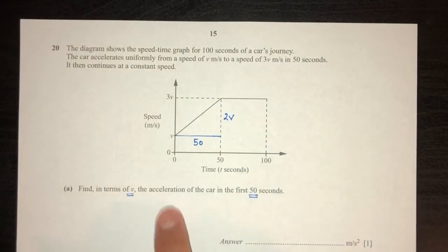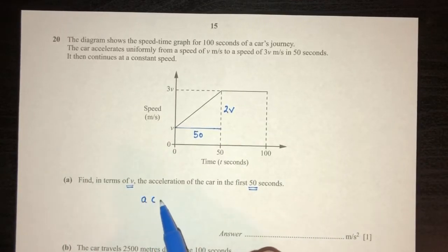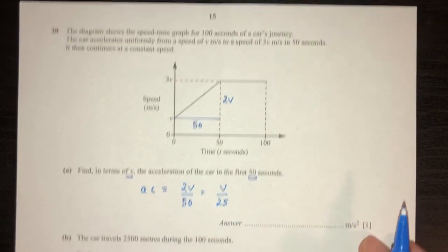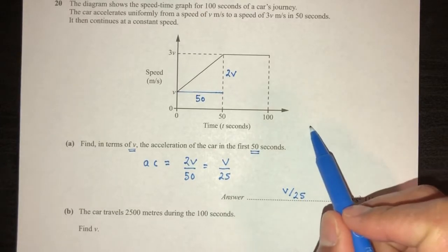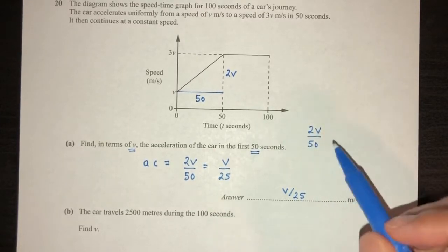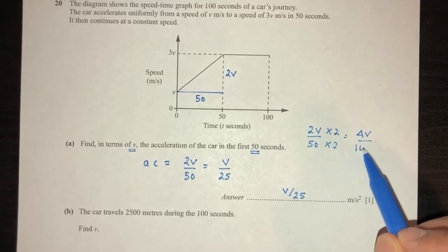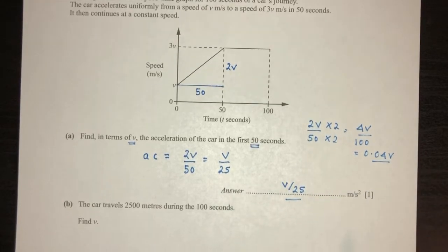So to find the acceleration, as you guys know by now, we have to look at our right angle triangle and take is equal to height divided by base. That will be V over 25. Or if you want to, you can simplify that in terms of decimal place. You can multiply by 2 here, multiply by 2 here, you will have 4V over 100, which is 0.04V. You can choose this or this as your answer. It is in terms of V.